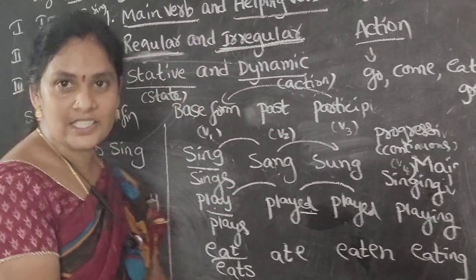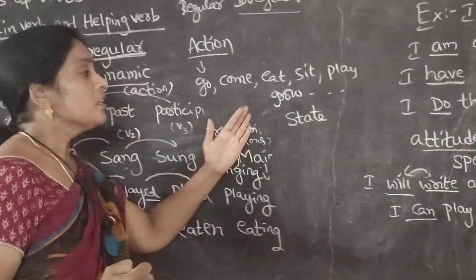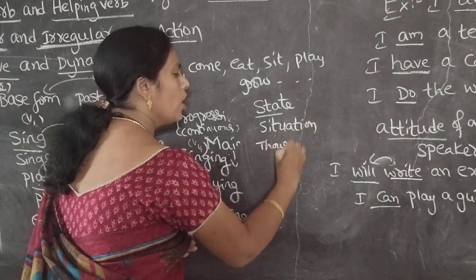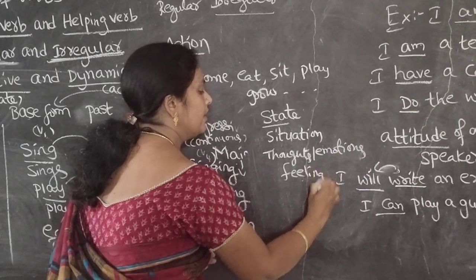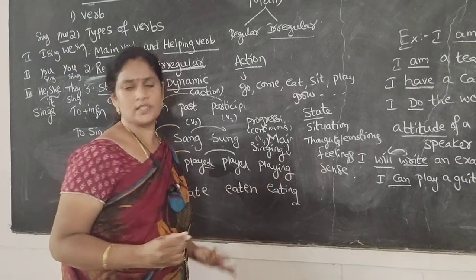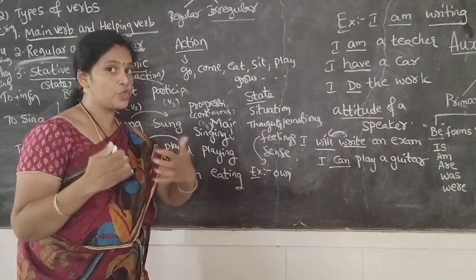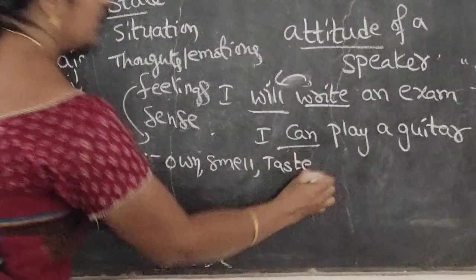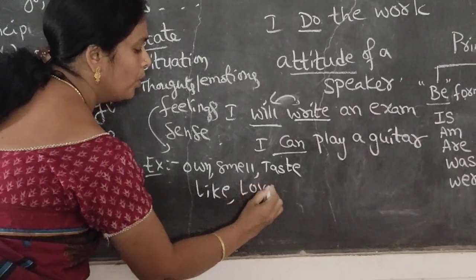Whereas if you see the stative words — these indicate a situation, or thoughts, emotions, feelings, and senses. Stative words express these. What are those? For example: own — owning is a feeling, it belongs to me only. Or senses like smell, taste. And thoughts and emotions like love and so on.